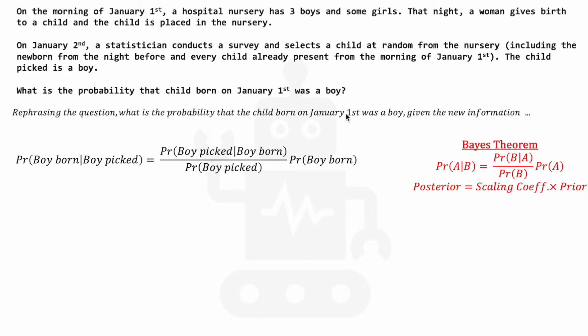Expanding on this, we get the following. What the question is trying to test us on is how would our priors change given this new piece of information? Our priors here meaning: what would our prior estimate of the probability of the child being born being a boy be?